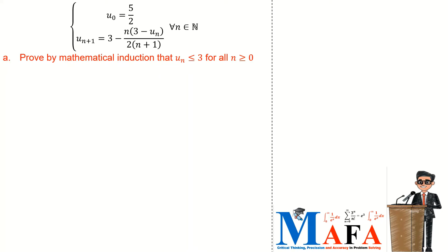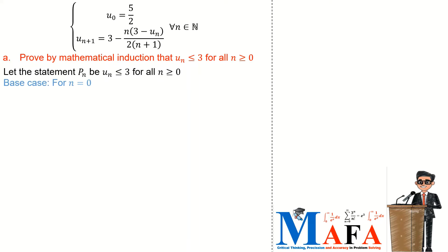We begin by letting the statement P(n) be: u_n is less than or equal to 3 for all n greater than or equal to 0. From there we begin with our base case — that is, we verify if the statement P(0) is true. For n equal to 0, statement P(0) is: u_0 is less than or equal to 3. Since u_0 is equal to 5 over 2, which is 2.5, it is less than or equal to 3.